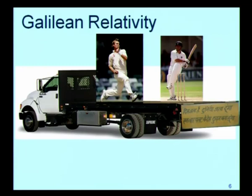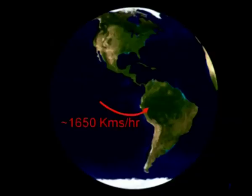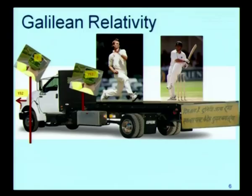The speedometer on the truck will record the speed of the ball to be 152 kilometers per hour. Suppose the truck itself is moving at 152 kilometers per hour in the same direction, and the speed is measured by a speedometer mounted on the ground. What speed will that ground speedometer record for the ball bowled by Bret Lee?